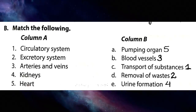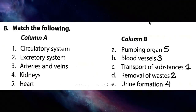Now match the following: circulatory system — C, transport of substances. Excretory system — D, removal of waste. Arteries and veins — B, blood vessels (thin tubes; red colored ones are arteries, blue colored ones are veins). Kidneys — E, urine formation. Heart — A, pumping organ that pumps blood.